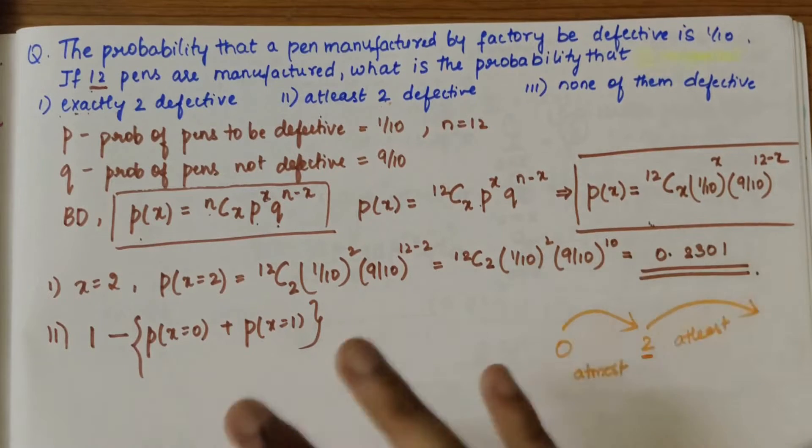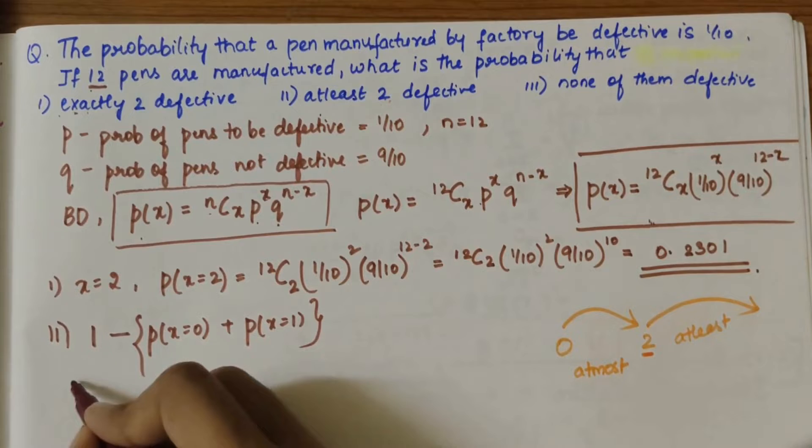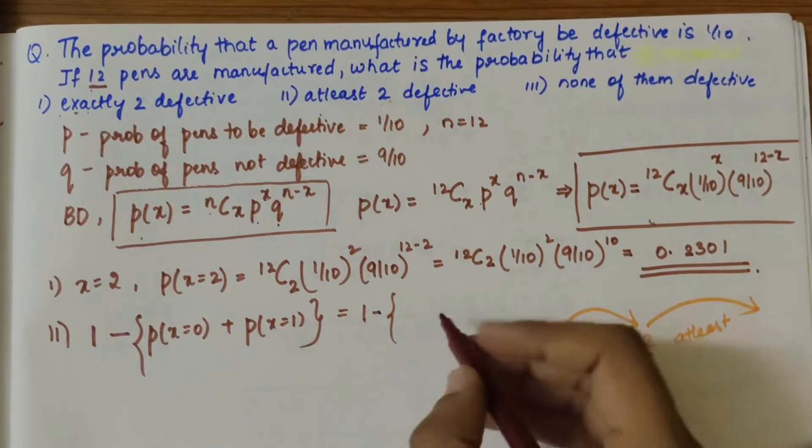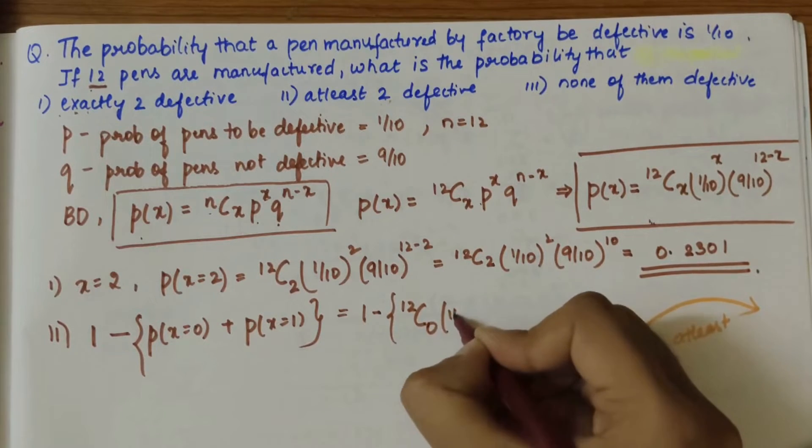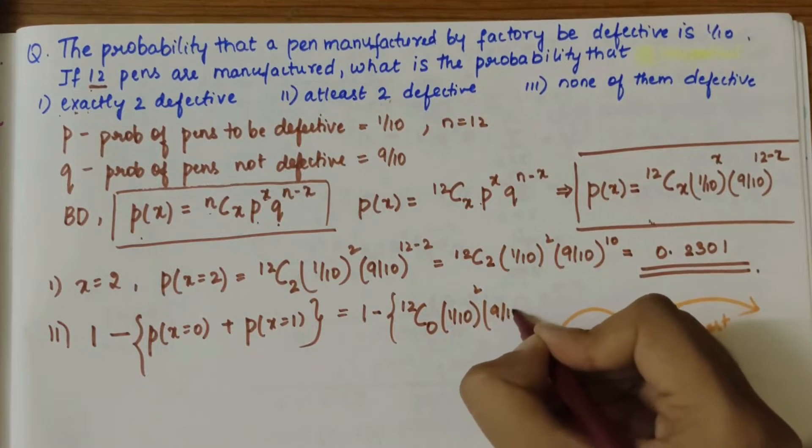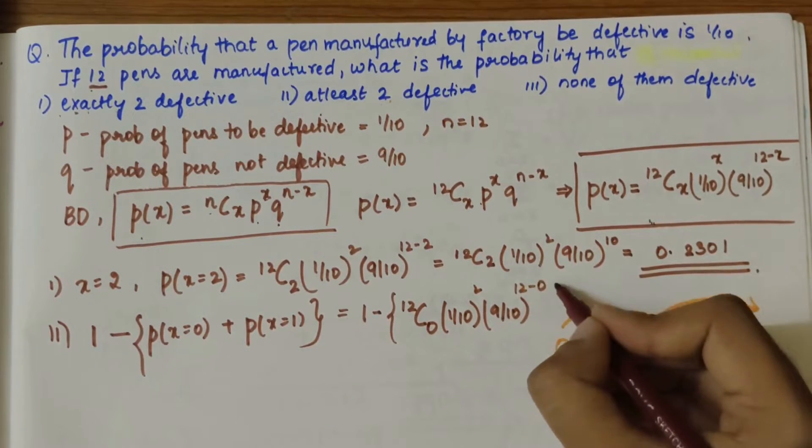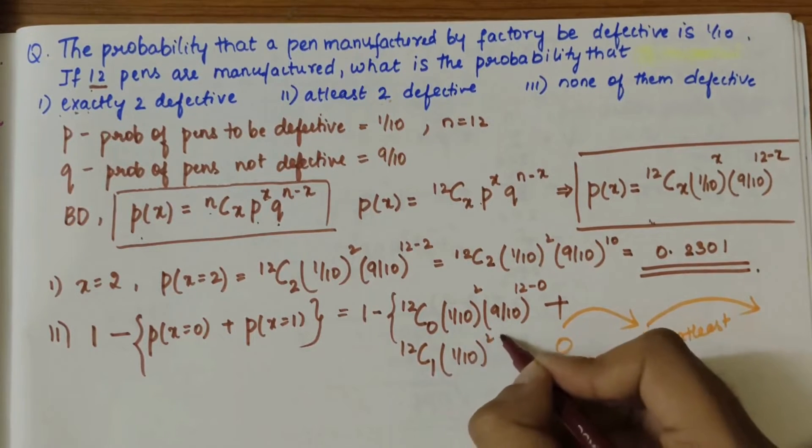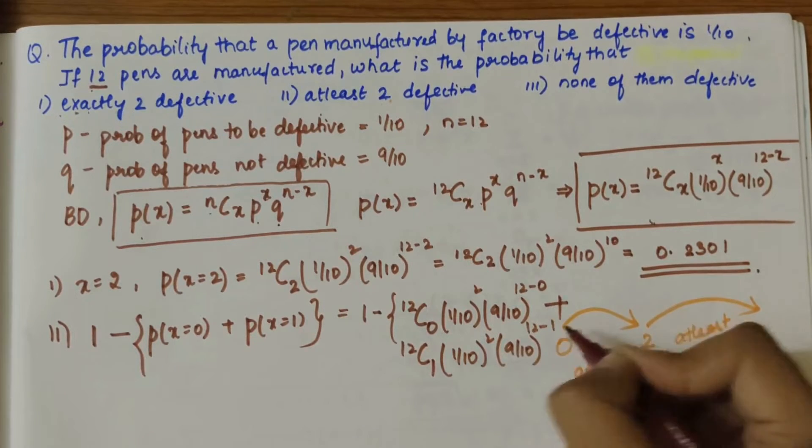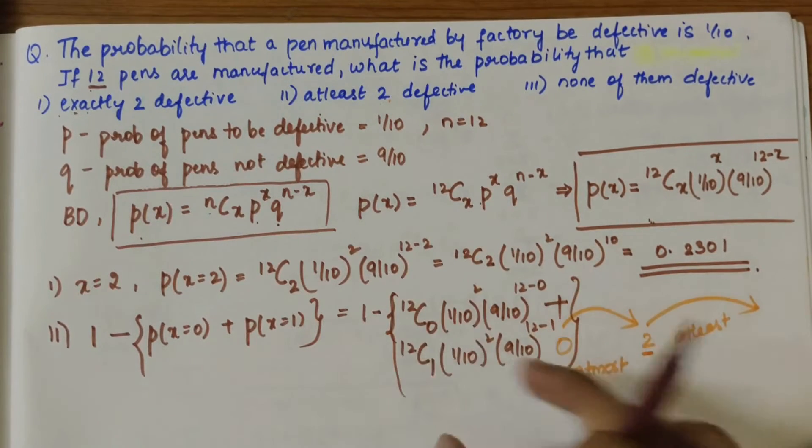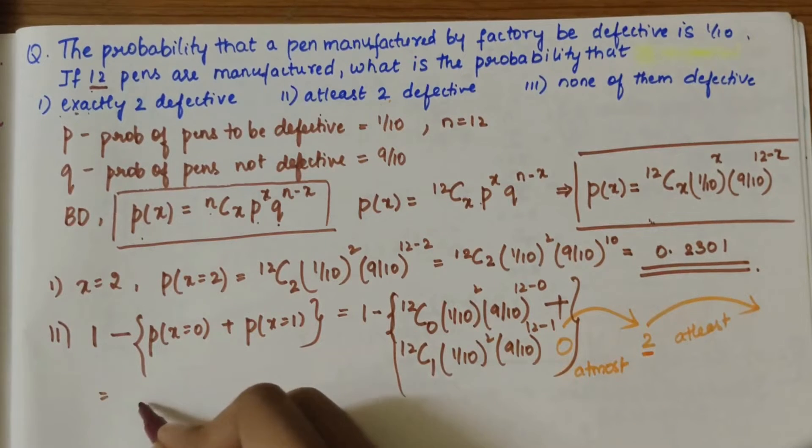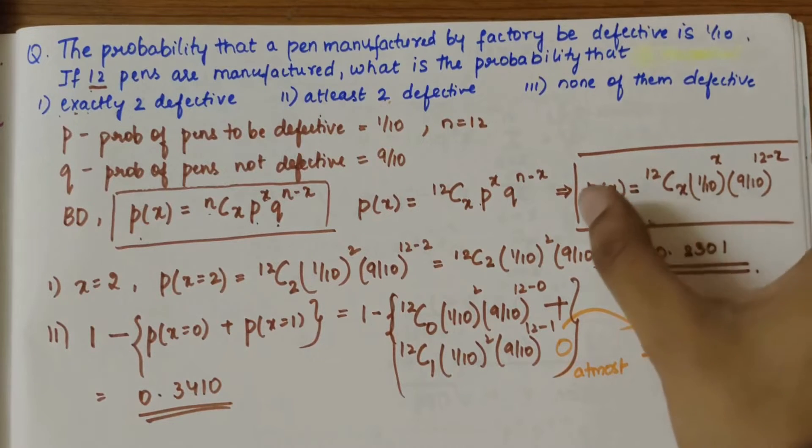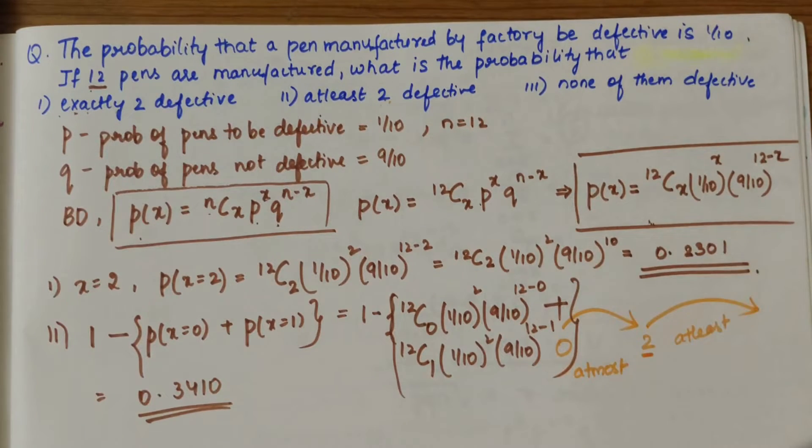So P(X=0) is 12C0 (1/10)^0 (9/10)^12 plus 12C1 (1/10)^1 (9/10)^11. So 1 minus this entire thing you'll get 0.3410. You can type this equation in your calculator and keep updating the values of X, so it will become very easy to solve such questions.